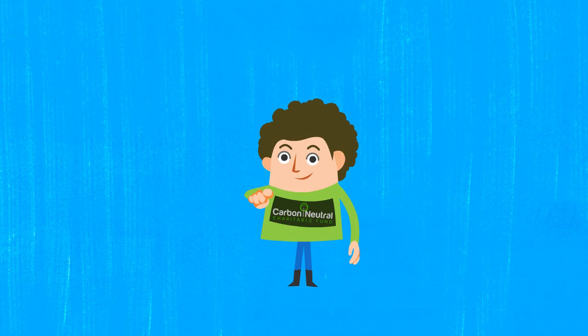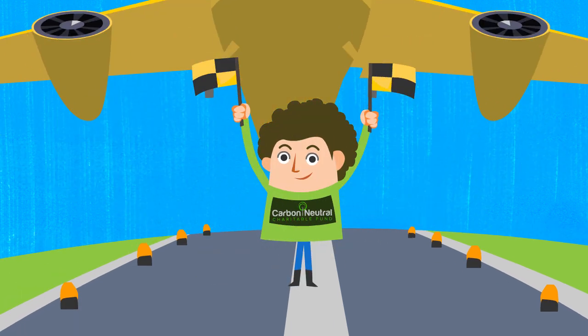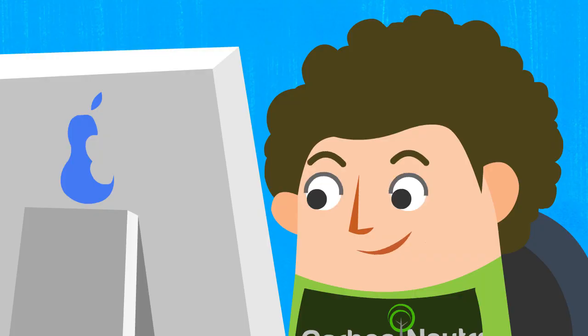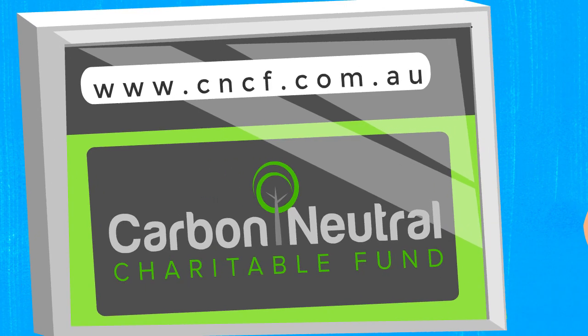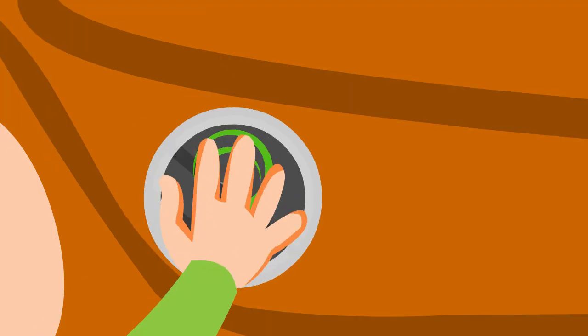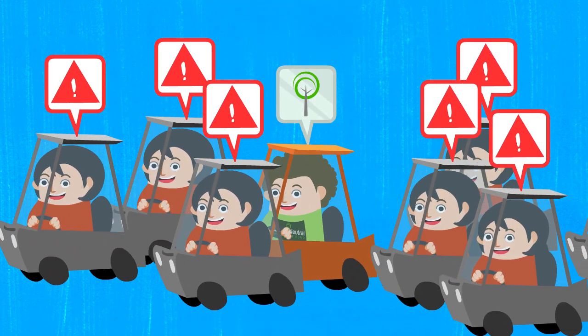But what if you already know your carbon footprint or just want to offset a set amount? Say, your company's flights for the year or the amount that your fleet emits. Not a problem. We allow you to pick the tonnage of carbon that you want to offset. We'll help you reach your sustainability goals and you can spread the word and let others know about the great work you're doing for the environment.